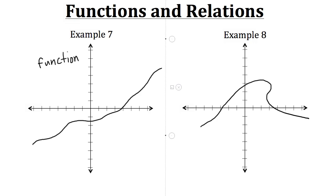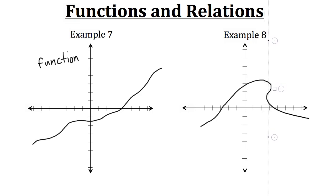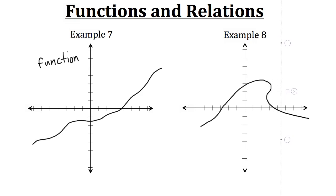Now let's take a look at the relation in example 8 and use the vertical line test to see if it is a function. We'll take the vertical line and sweep through it from left to right. Right now it's only going through one point until we get to this area, where the vertical line is hitting more than one point on the relation — right here, right here, and right here. Because the vertical line is hitting multiple points, this relation would not be a function.